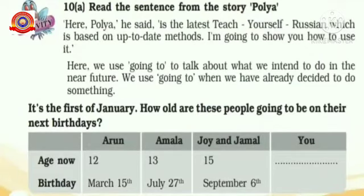Read the sentence from the story Polya: 'Here Polya,' he said, 'is the latest teach yourself Russian which is based on up-to-date methods. I am going to show you how to use it.' Here we use 'going to' to talk about what we intend to do in the near future. We use 'going to' when we have already decided to do something.